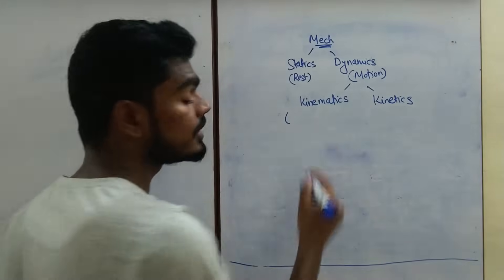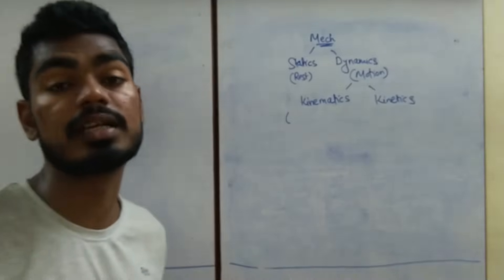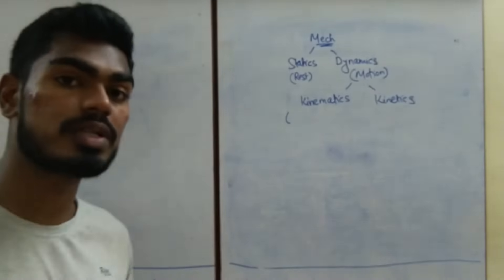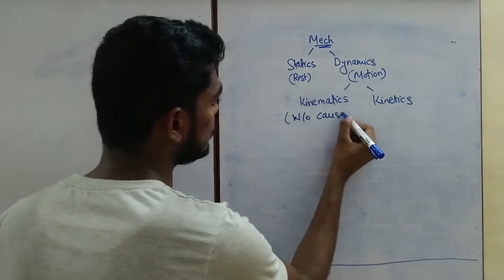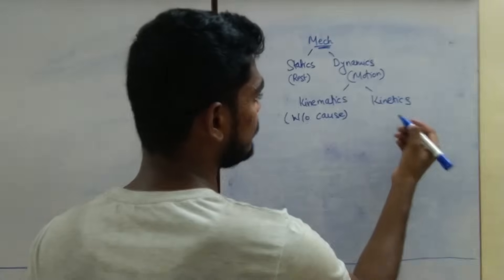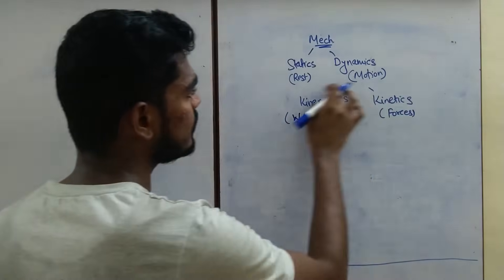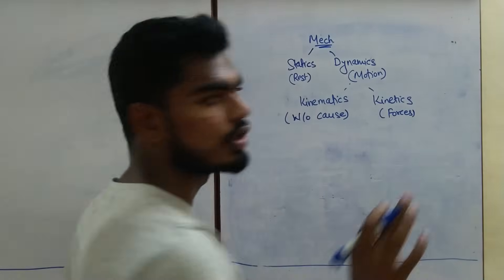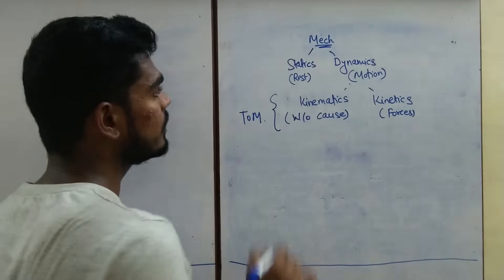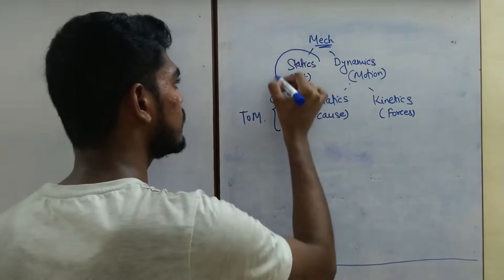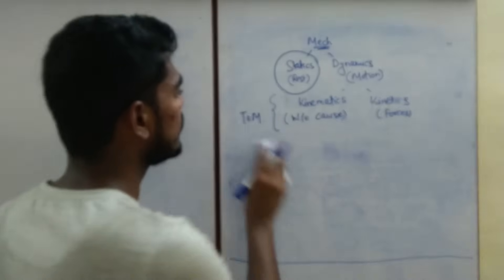In kinematics, we do not consider the cause of motion — we only study the motion itself: displacement, velocity, or acceleration, without considering forces. But when we talk about kinetics, we do consider the forces. These two topics are mainly useful in Theory of Machines. In Solid Mechanics, we will mainly deal with statics — when there is no motion and the object is at rest.